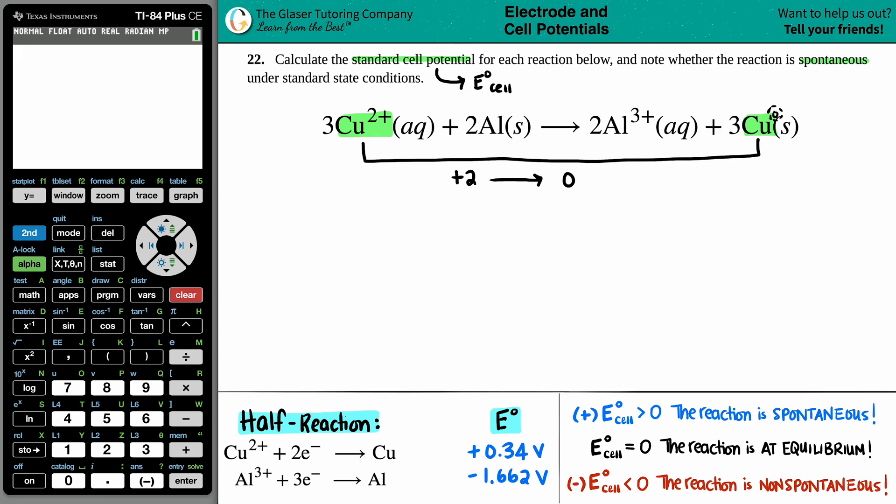And now if I hook up the aluminums, it's kind of the opposite. I'm starting off with an aluminum that has no charge and then I'm going to an aluminum that has a 3 plus charge. So I'm going from a zero to a plus 3.